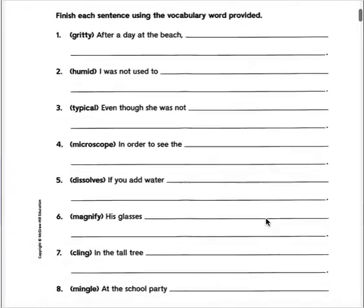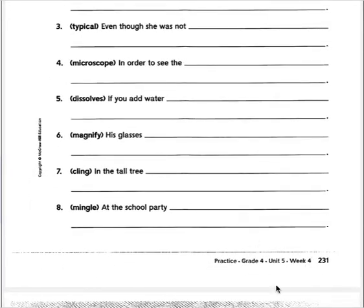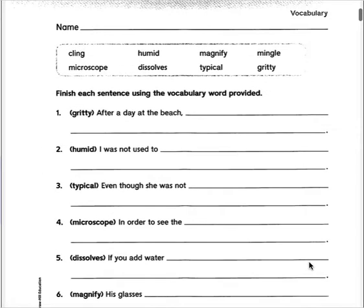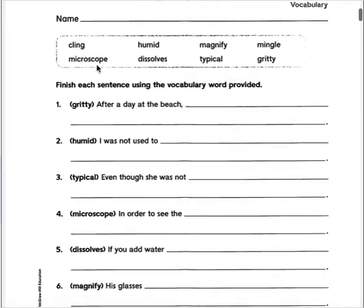So you're going to start with your vocabulary. As you can see, it's getting vocabulary from Unit 5, Week 4. This week's vocabulary words are: cling, microscope, humid, dissolves, magnify, typical, mingle, and gritty. So out of all eight of these words, put a little X or circle the ones you do know — the ones, and be honest with yourself, the ones you know you can use in a sentence, you can use in daily vocabulary if you had to.